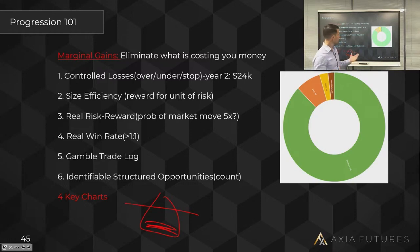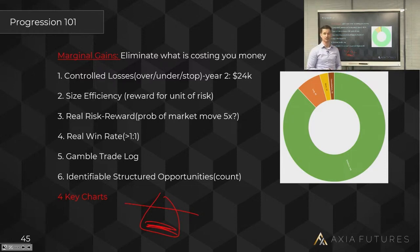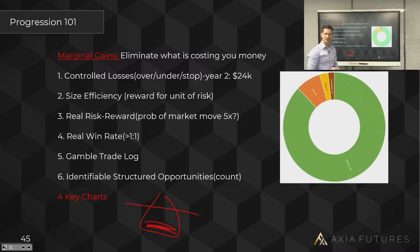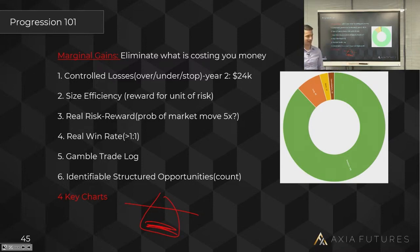When I started tracking controlled losses, what I found was that in year two I had actually lost twenty-four thousand dollars to controlled losses. If you just think about that — twenty-four thousand dollars in your second year. During my post-year analysis I looked at it and thought: if I just eliminate or minimize controlled losses by fifty percent, how much of a marginal gain am I getting? You're all starting to understand why we want to track controlled losses.